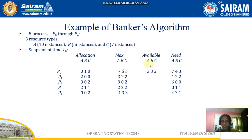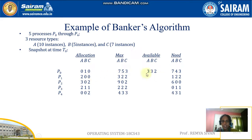The need of P0 is calculated as max minus allocation — as I explained in the last video. So: 7 minus 0 is 7, 5 minus 1 is 4, 3 minus 0 is 3. P1 is allocated with 2A, 0B, 0C. Maximum P1 requires 3A, 2B, 2C. So the need of P1 is: 3 minus 2 is 1, 2 minus 0 is 2, 2 minus 0 is 2.